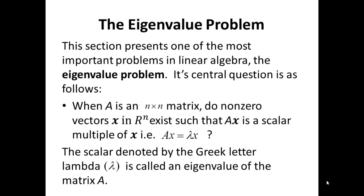Let us begin by introducing the eigenvalue problem. Section 7.1 presents one of the most important problems in Linear Algebra known as the eigenvalue problem. The question is: if A is an n by n matrix, do non-zero vectors x in the vector space Rⁿ exist such that Ax equals Lambda x for some scalar — some real number Lambda?